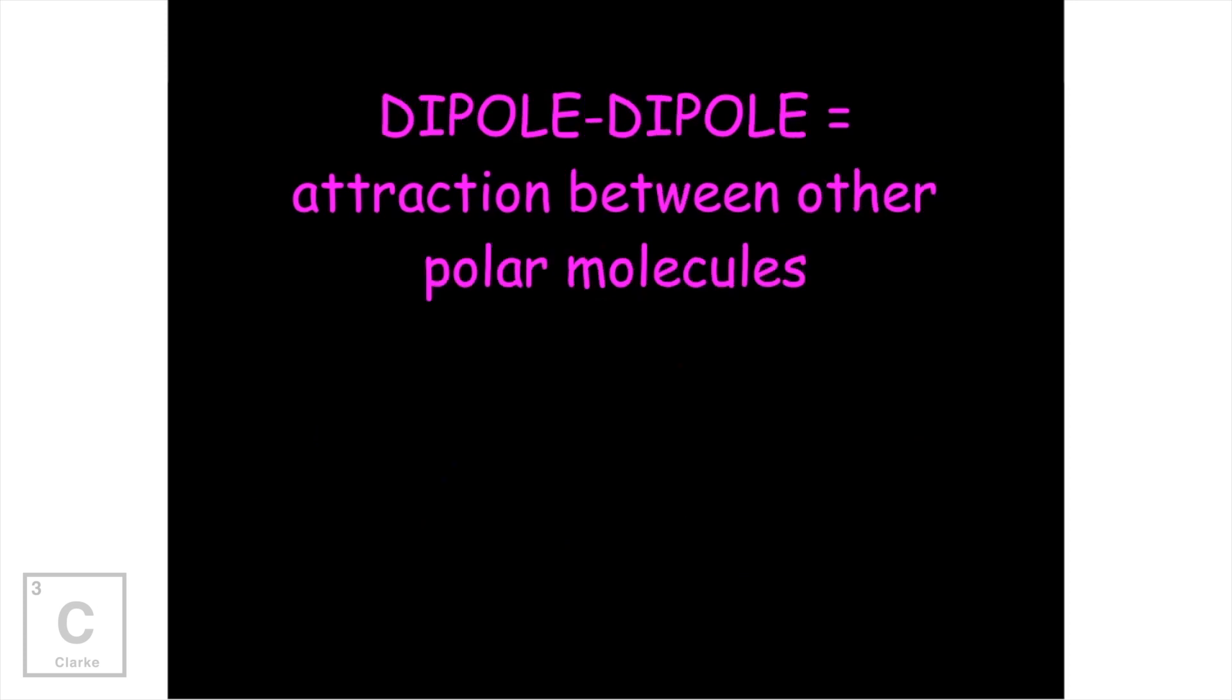Let's look at the second type: dipole-dipole. Now this is the attraction between other polar molecules. Hydrogen and the fluorine, oxygen, and nitrogen are specialized polar molecules because of their such electronegative difference. But we have other polar molecules that have a little bit lesser electronegative difference. That's the attraction that these types of molecules are going to have.